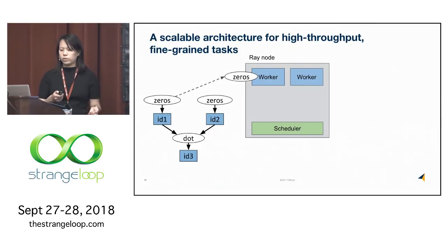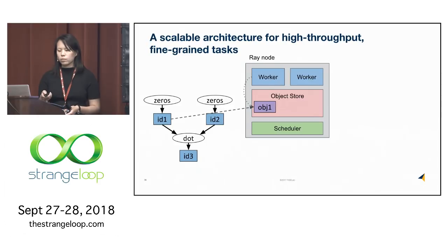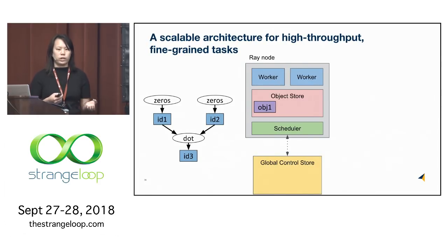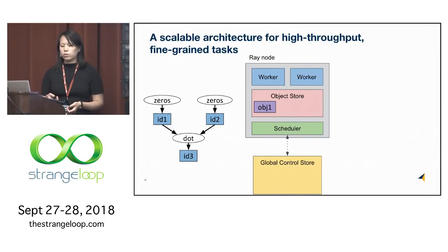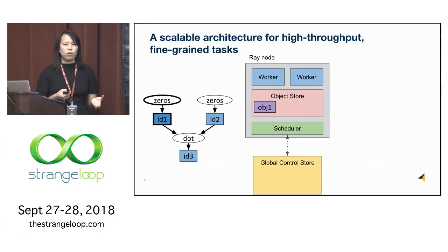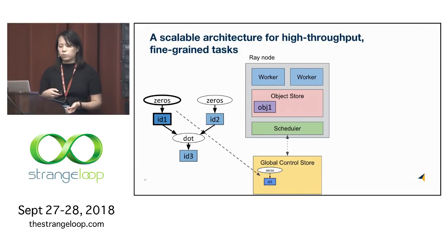The scheduler assigns the first zeros task since it has no data dependencies, and the worker begins executing it. Once completed, it stores the return value in the object store—there's one per node—and talks to the object store to store the input and output values of each task. We also have a global control store, which is a fault-tolerant key-value store holding all system metadata, including object locations for all objects in the cluster and the lineage of a piece of data—the subgraph of the dynamic task graph describing what tasks were required to create a given object.